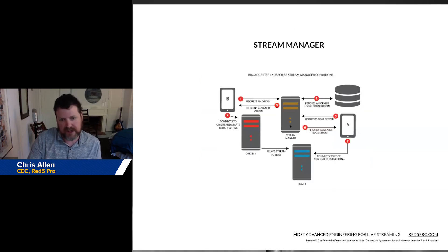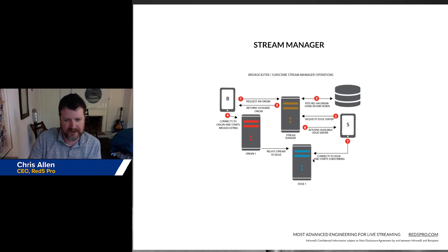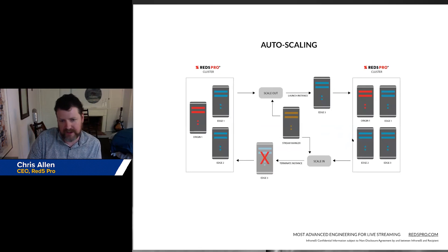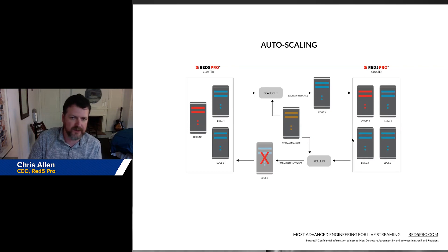The brain of the operations is this thing called the stream manager, which is routing the streams. Broadcasters connect to it and get assigned an origin, and subscribers connect to it and get assigned an edge to subscribe to that stream. It takes care of auto-scaling — it can move up and down and add instances as needed depending on the load.